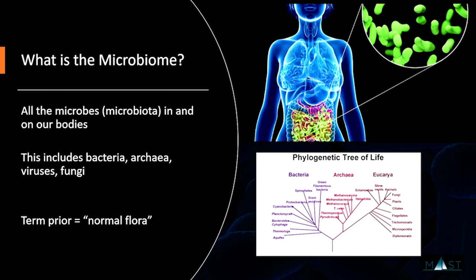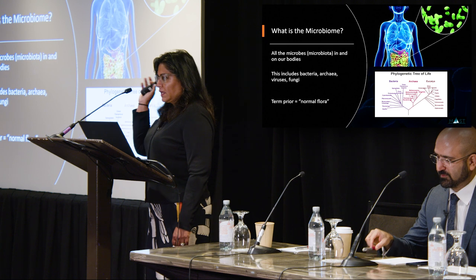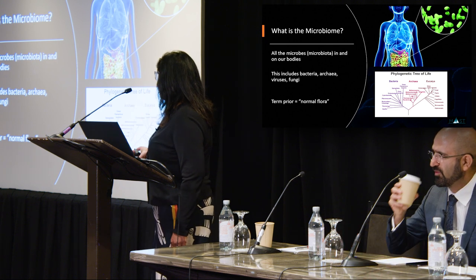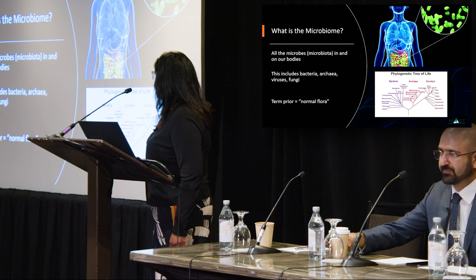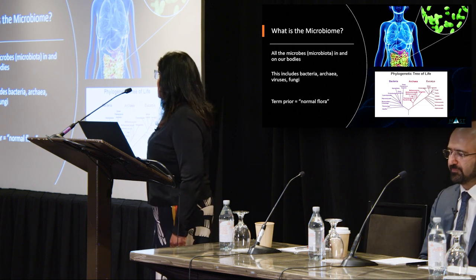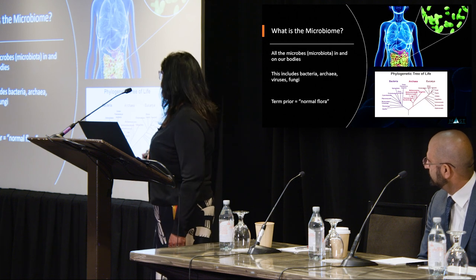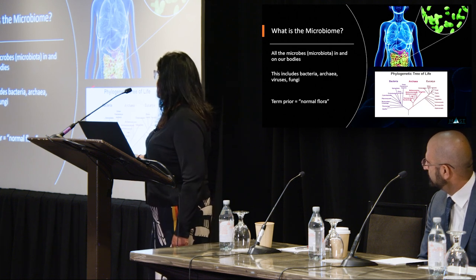The microbiome is any and all microbes that are in and on our bodies — microbes in our mouth, on our skin, in our vaginal flora. All of these different areas actually have their own microbiome. We used to call it normal flora; we now call it microbiome. If you look at the phylogenetic tree of life, you'll notice it has three arms: bacteria, eukaryotic cells (plants, animals, fungi), and archaea.